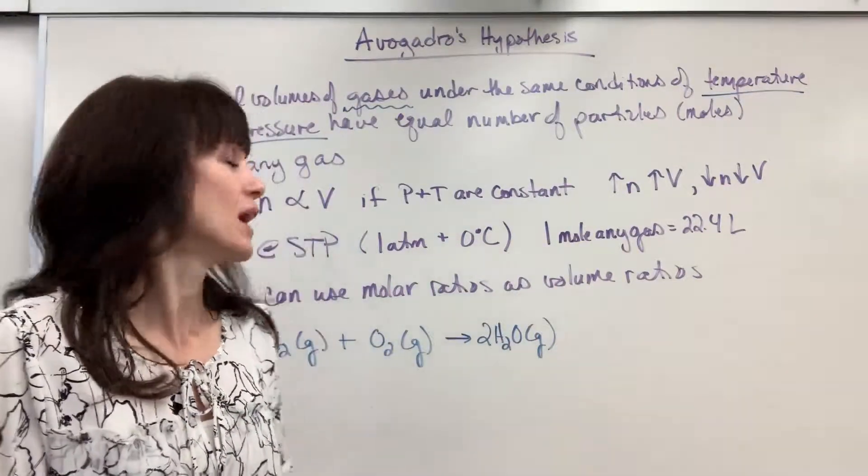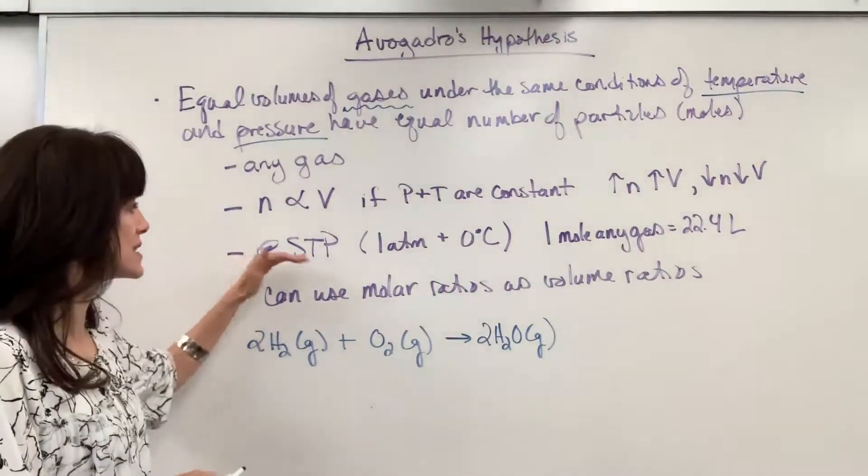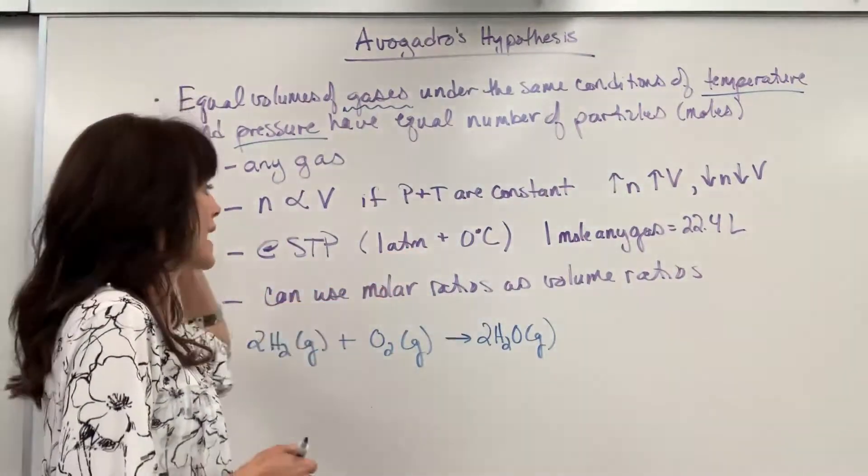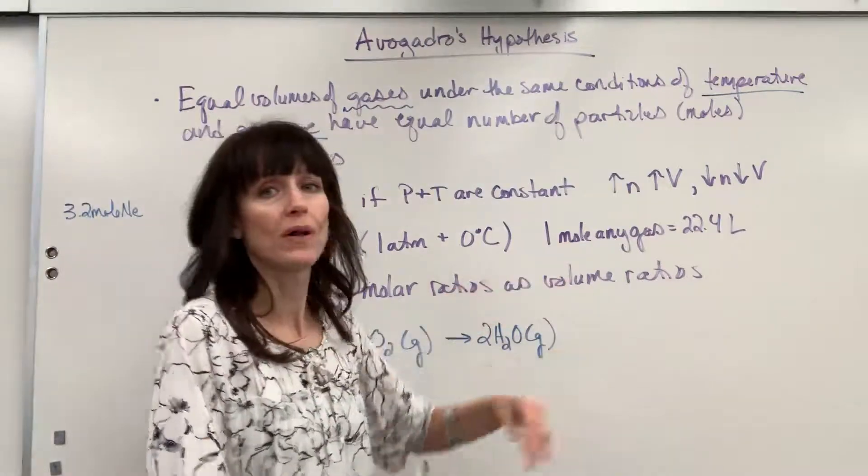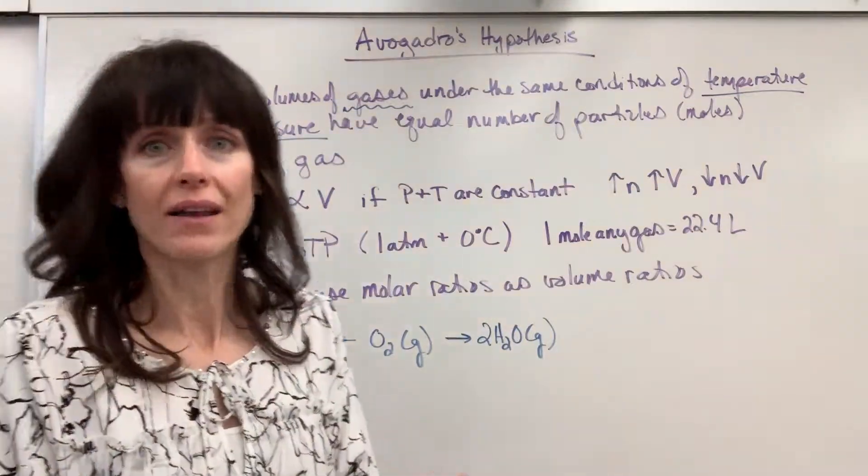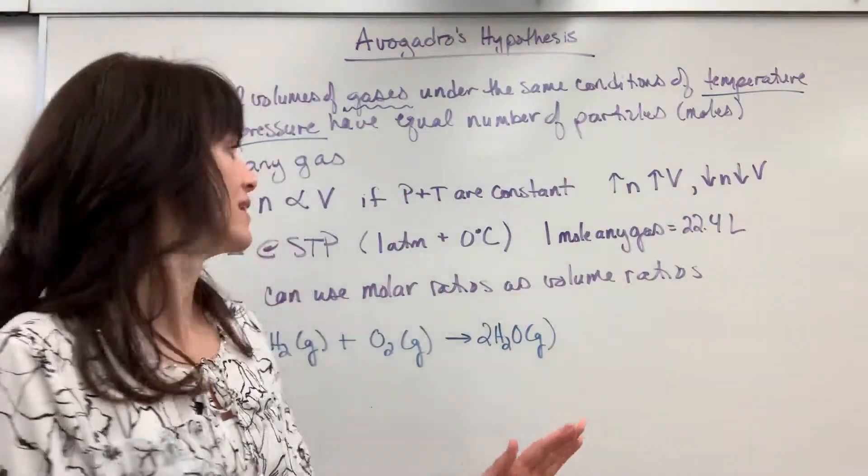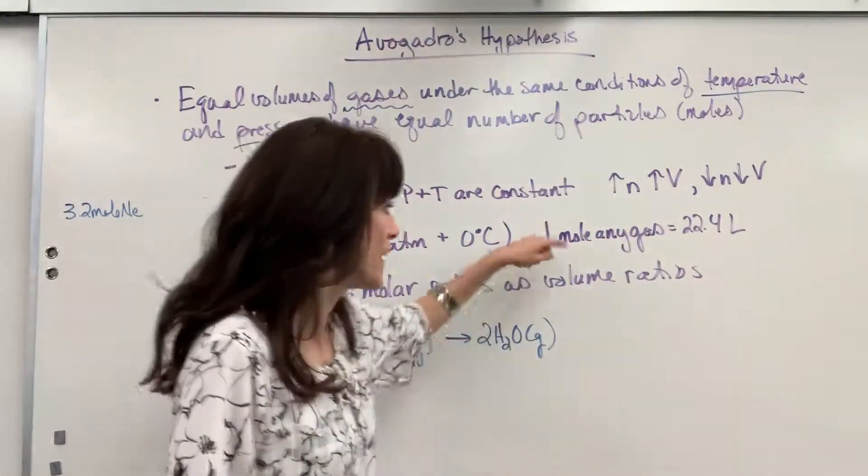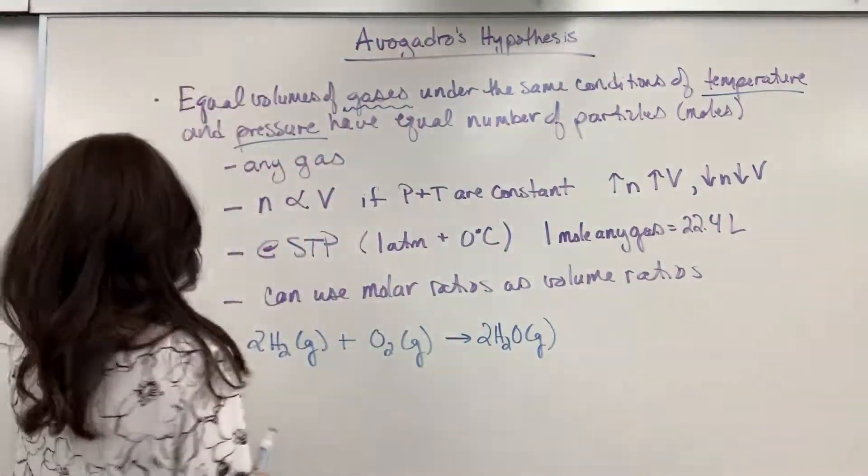The second really important outflow application is this fact right here. At STP, and you'll recall, STP is 1 atm and 0 degrees C. Watch that video if you have a question. So, at standard temperature and pressure, we're holding that temperature and pressure constant at standard conditions. One mole of any gas. So, it can be carbon dioxide. That's a molecule. It could be neon, a noble gas. It could be chlorine, a diatomic gas. One mole of any gas has a volume of 22.4 liters. That right there is a ratio, which means that we could use it with dimensional analysis. I have an example right here.